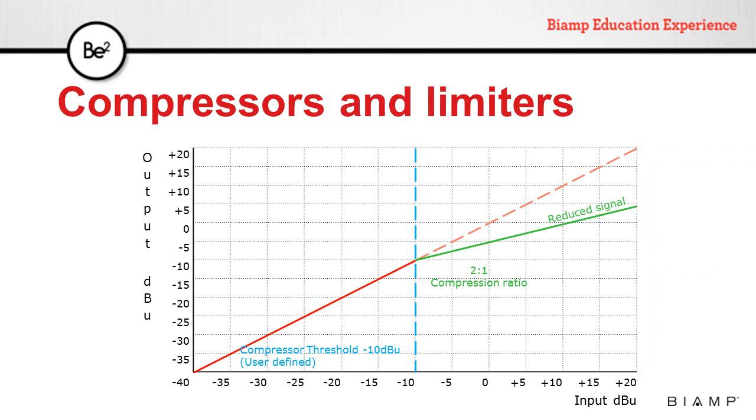If we increase the ratio to 2 to 1, we see the signal being reduced above the threshold. In this case, we can clearly see that the dynamic range is being reduced. The amount of gain reduction is determined by the ratio.